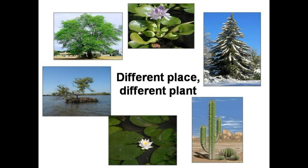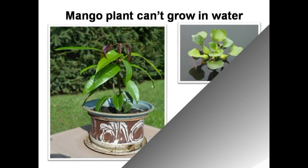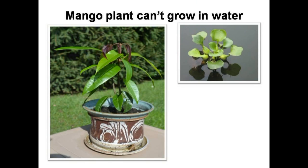Every plant grows in a certain kind of environment. Some live on land, some live in water, and some plants grow in snowy areas or deserts. If you throw a mango plant into a pond, would it grow there? No, a mango plant can't grow in water. Mango trees grow in plain land only.